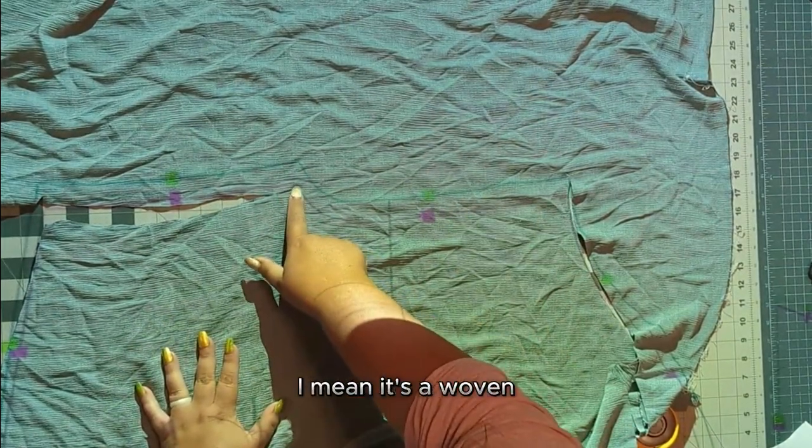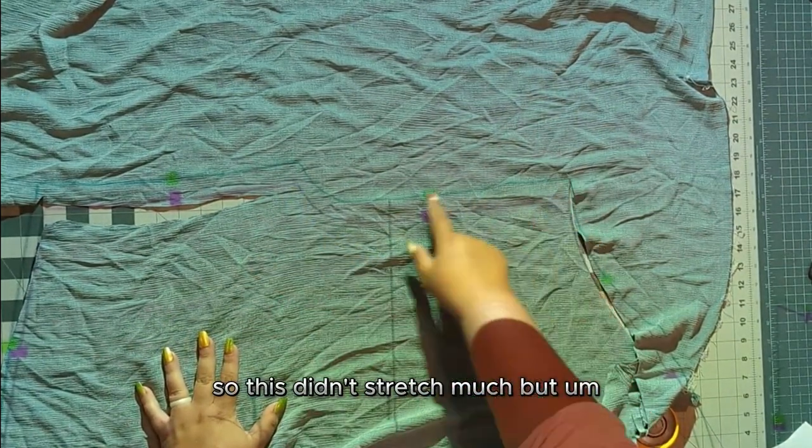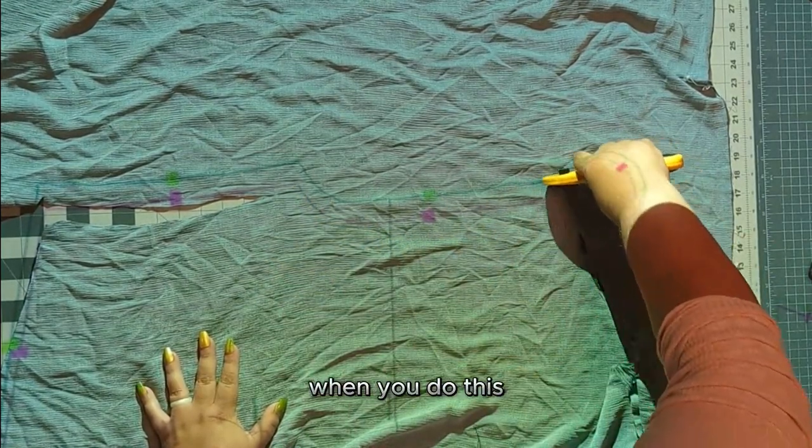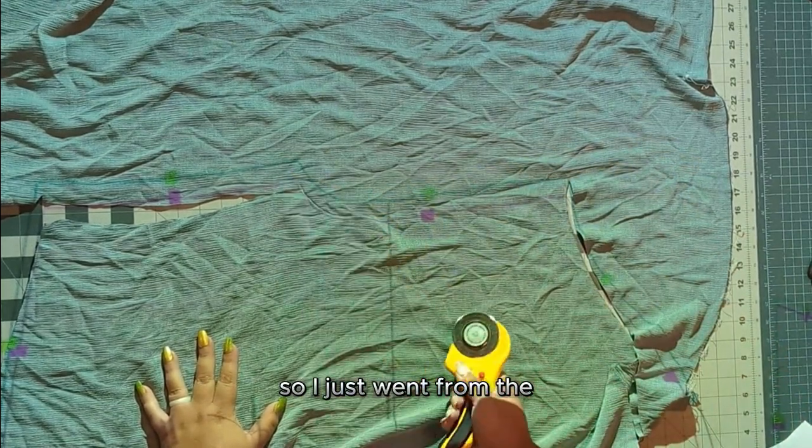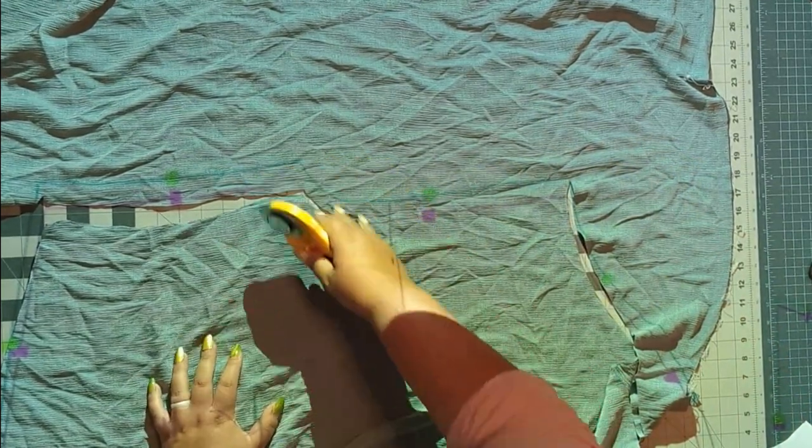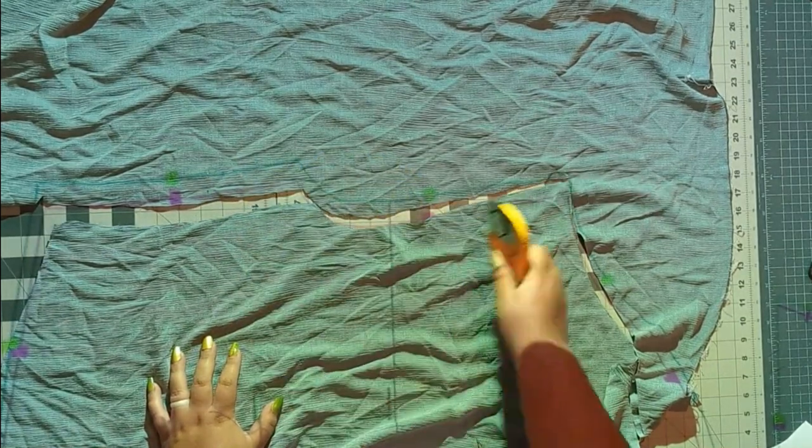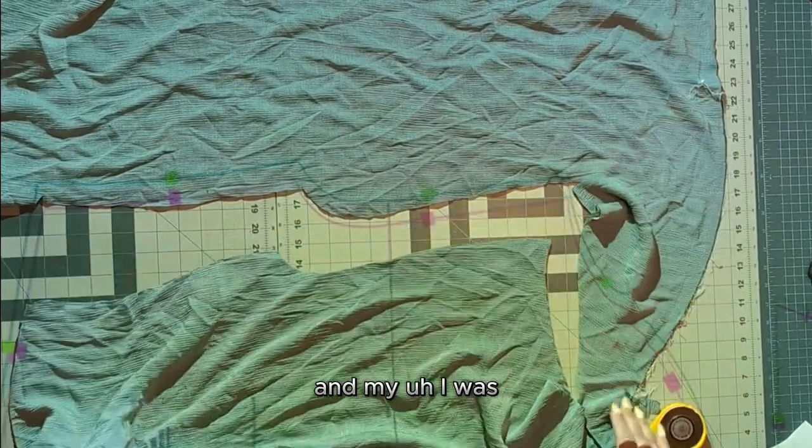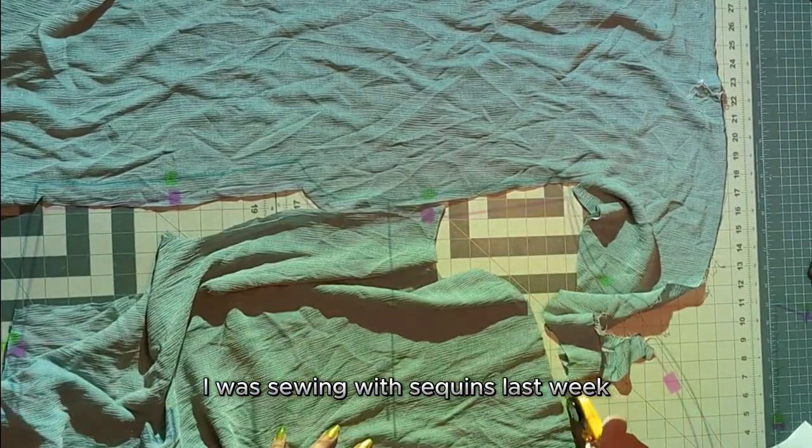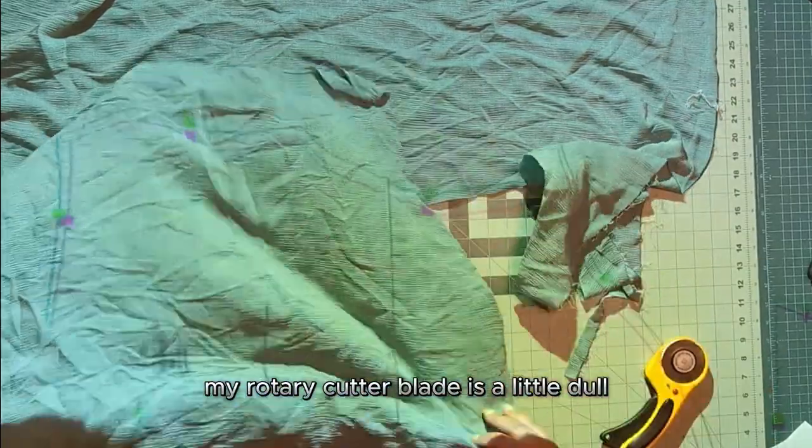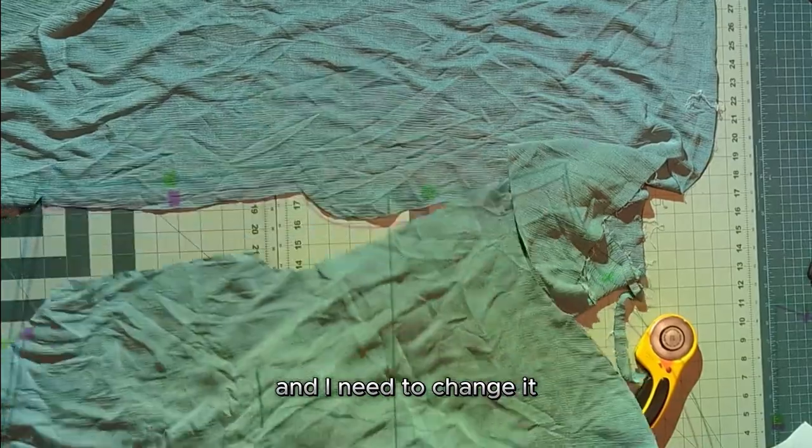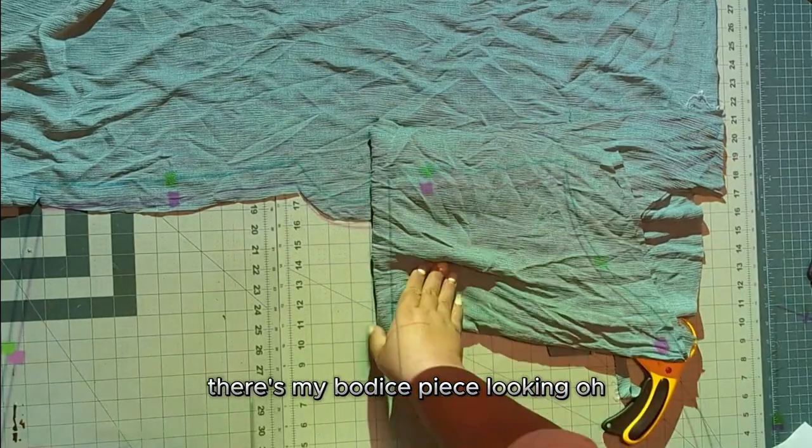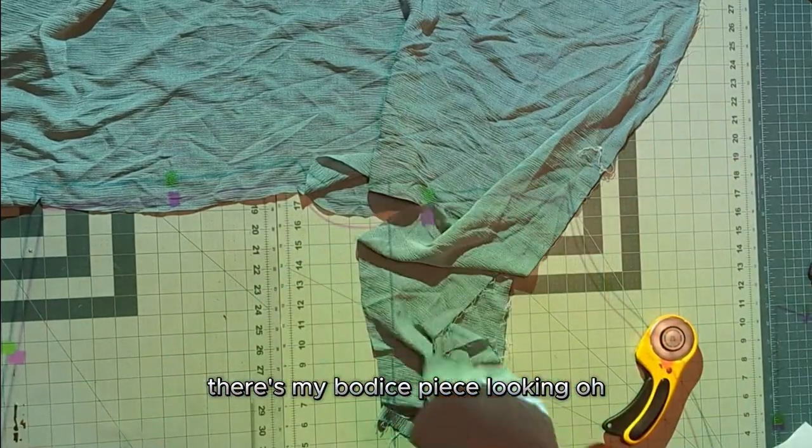So hopefully it didn't, I mean, it's a woven, so this didn't stretch much, but if you have a knit, you want to make sure it doesn't stretch too much when you do this. And now I'm just cutting the grading. So I just went from the 5x line at the hemline up to the 4x of the sleeve. And I was sewing with sequins last week. So my rotary cutter blade is a little dull and I need to change it. So my cuts are not as clean as they could be, but there's my bodice pieces looking so wrinkled.